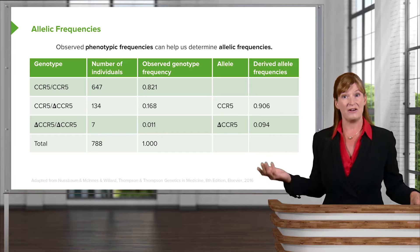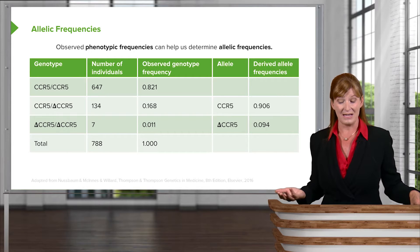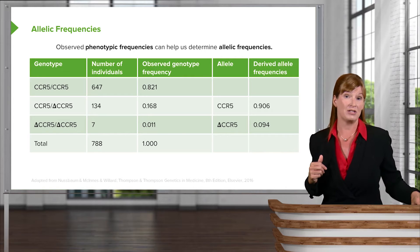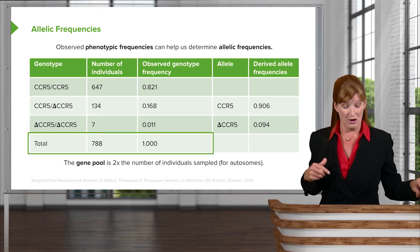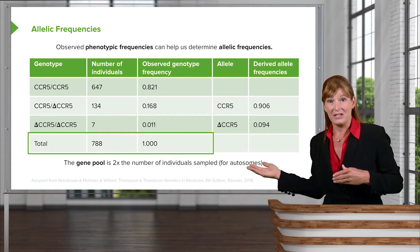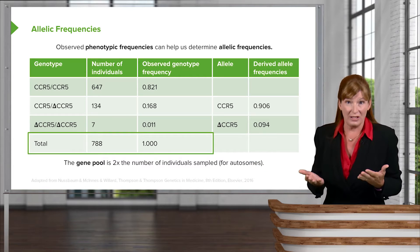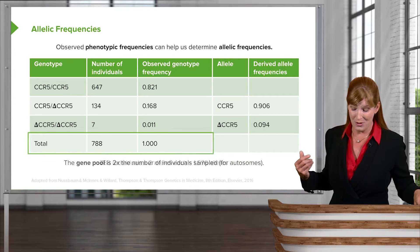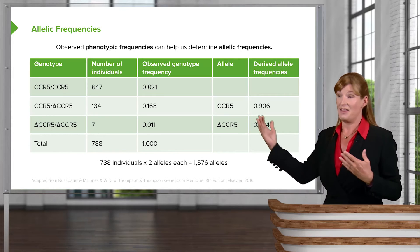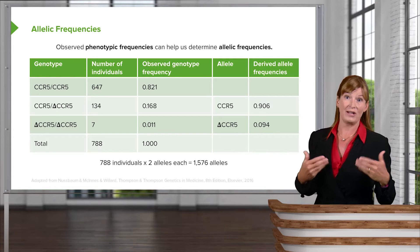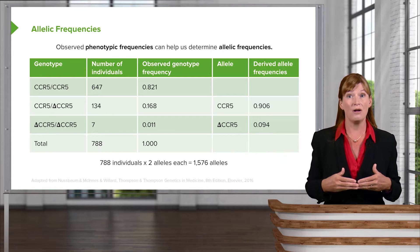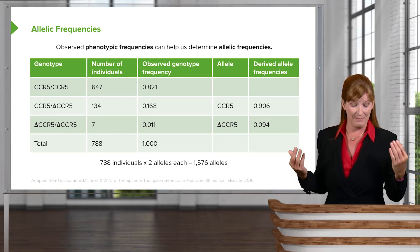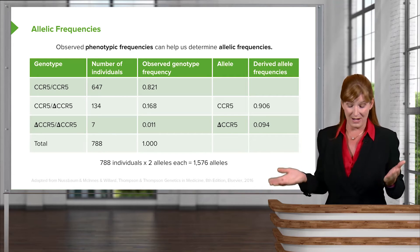As we consider allelic frequency, because we are looking at how many alleles of each type are in the population, we need to consider that there are 788 individuals in this population. So how many actual alleles are in the entire population? We multiply that number by two, because everybody has two chromosomes for each particular trait and thus two alleles.